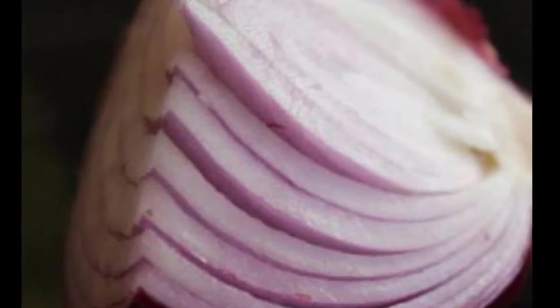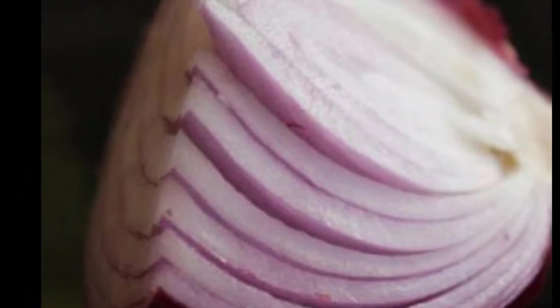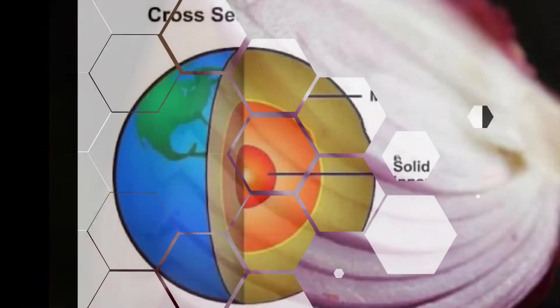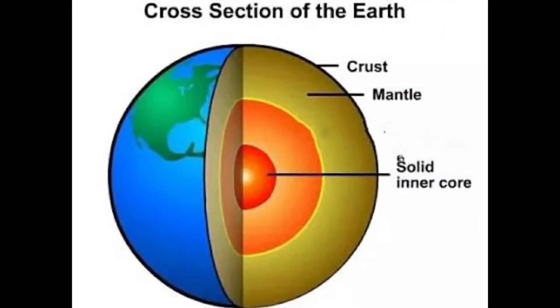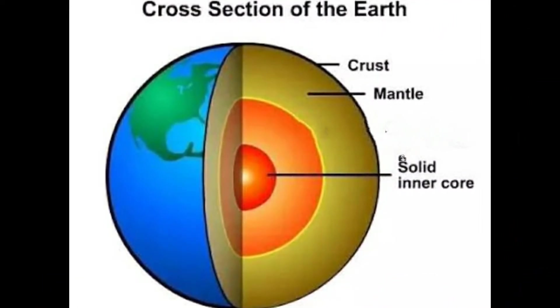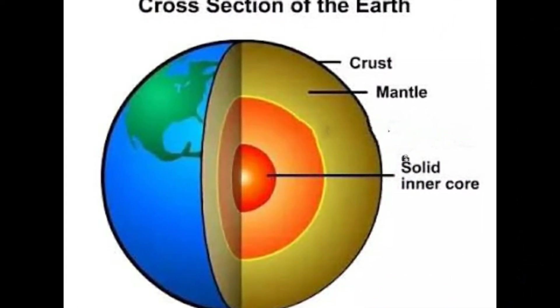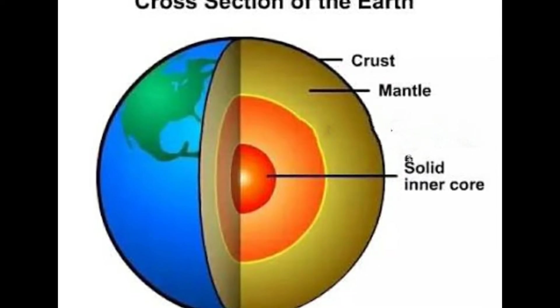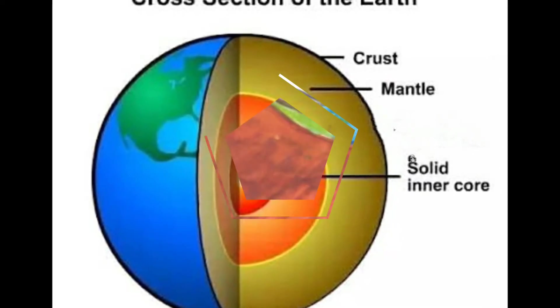The three layers of Earth are: Crust — the uppermost layer; Mantle — the middle layer; and Core — the innermost layer.